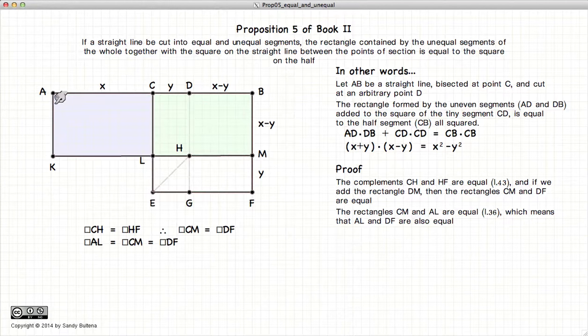added something else to both sides of the equations to get CM equal to DF. Now if we look at AL and CM, since C bisects AB, then AL will equal CM. But we've already demonstrated that CM equals DF. So we have AL equals DF.